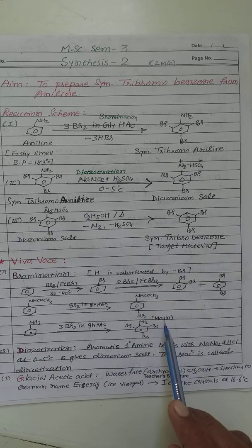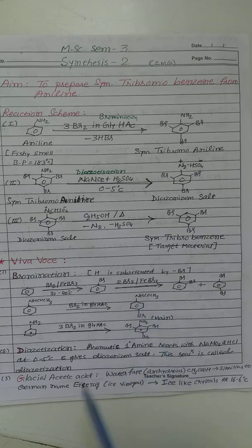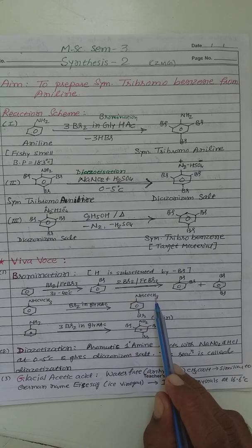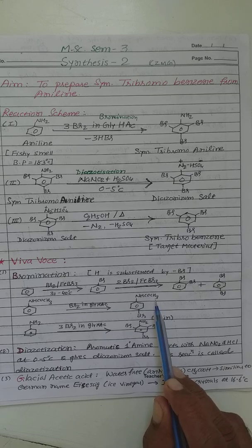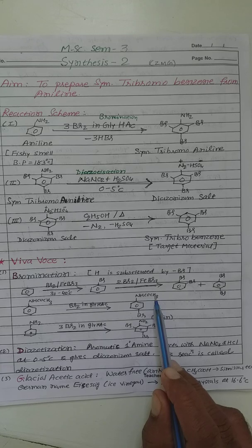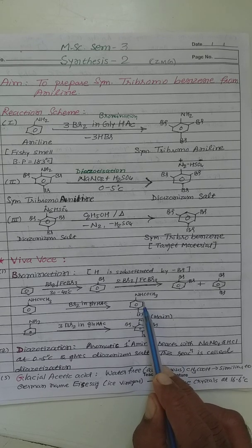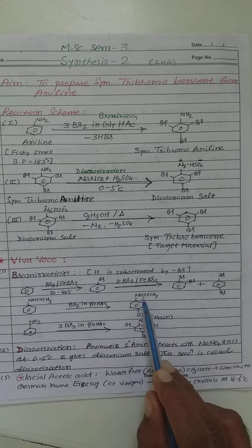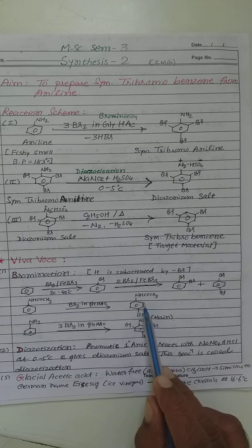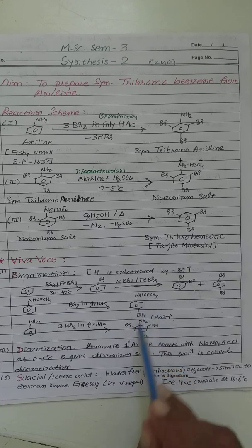But here main product is para-bromoacetanilide because you know NHCOCH3 group is bulky group. Its size is big and therefore in the presence of bulky group, bromine group cannot attached on ortho position because steric effect obtained between NHCOCH3 group and bromine, so product will become unstable.